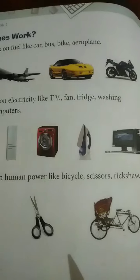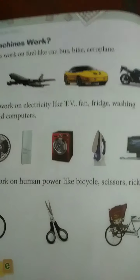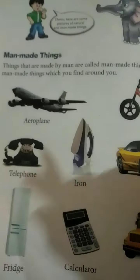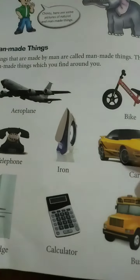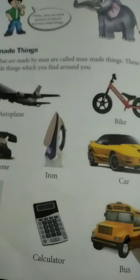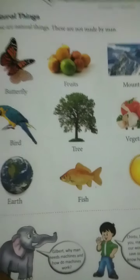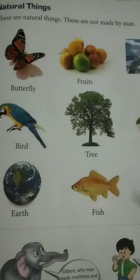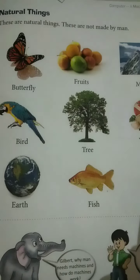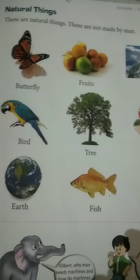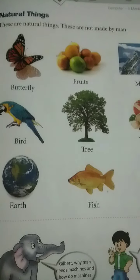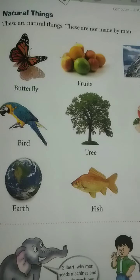So students, the examples of man-made things and natural things that were mentioned — like fruit, mountain, and aeroplane — all of these names you need to write in your notebook.